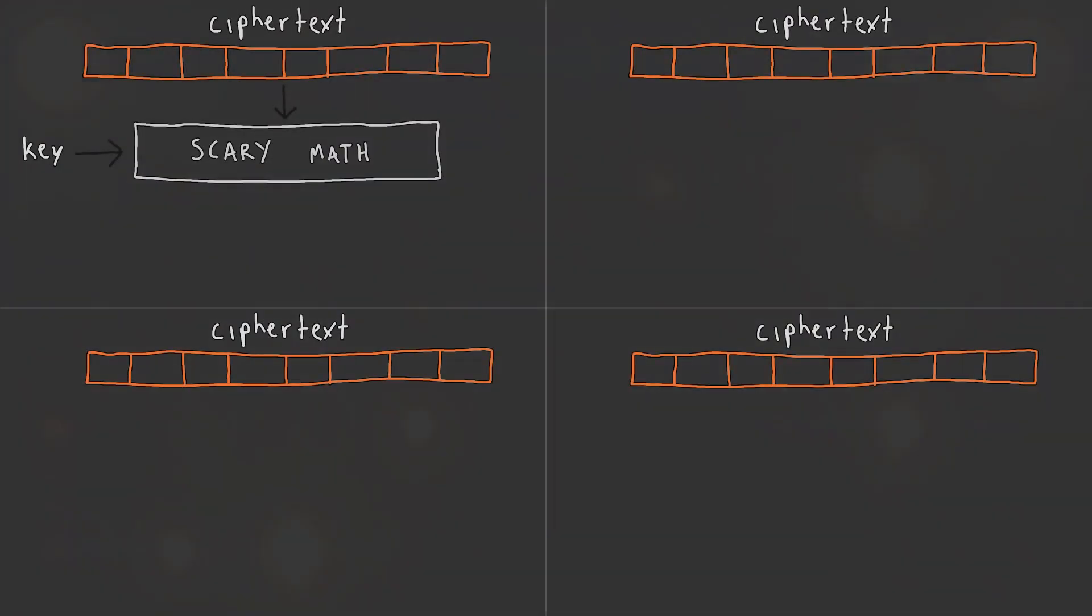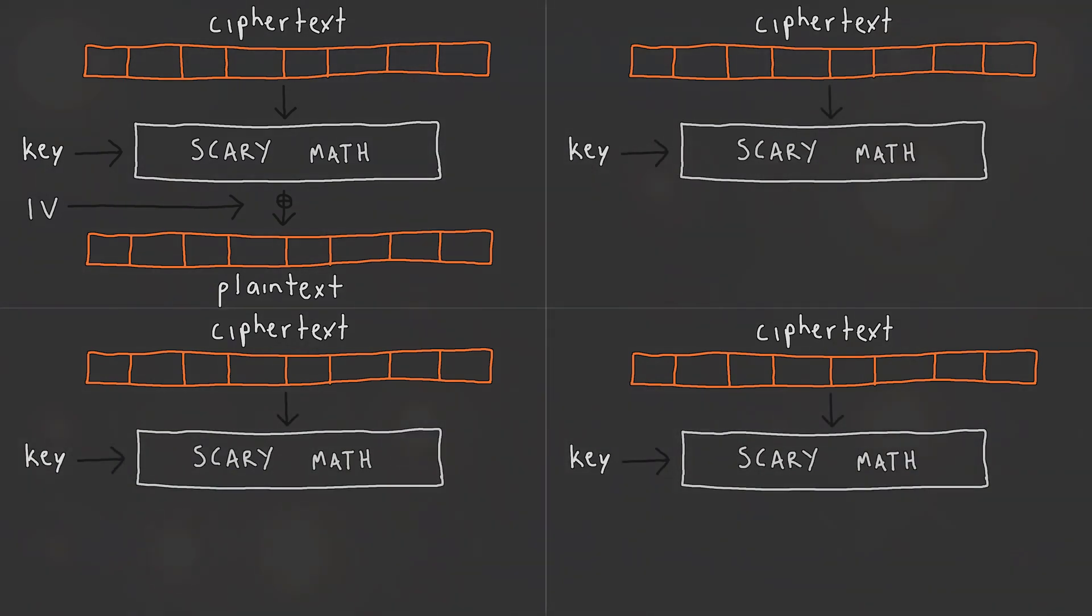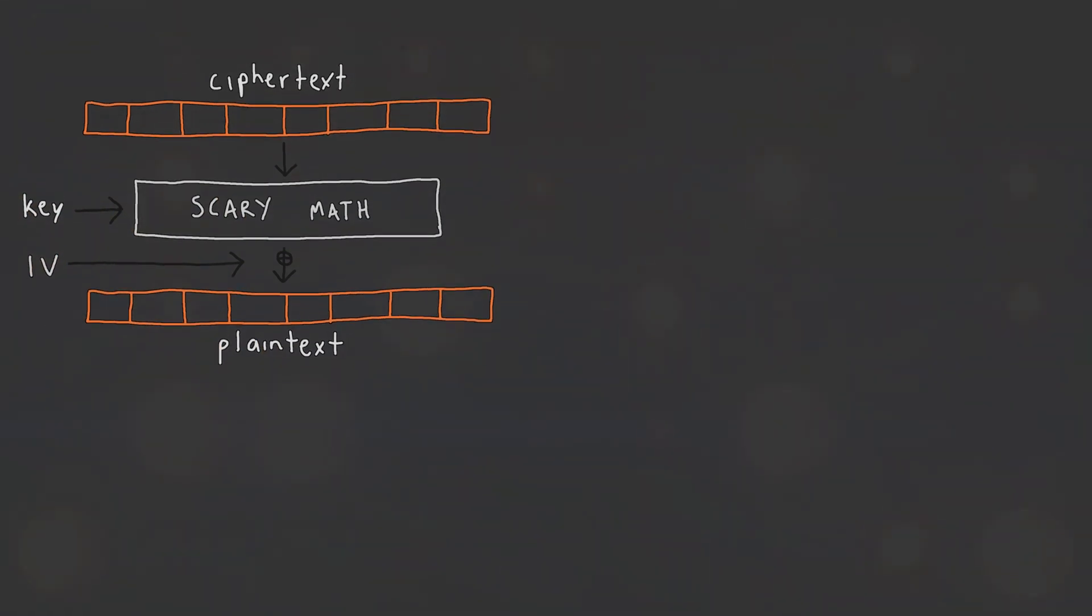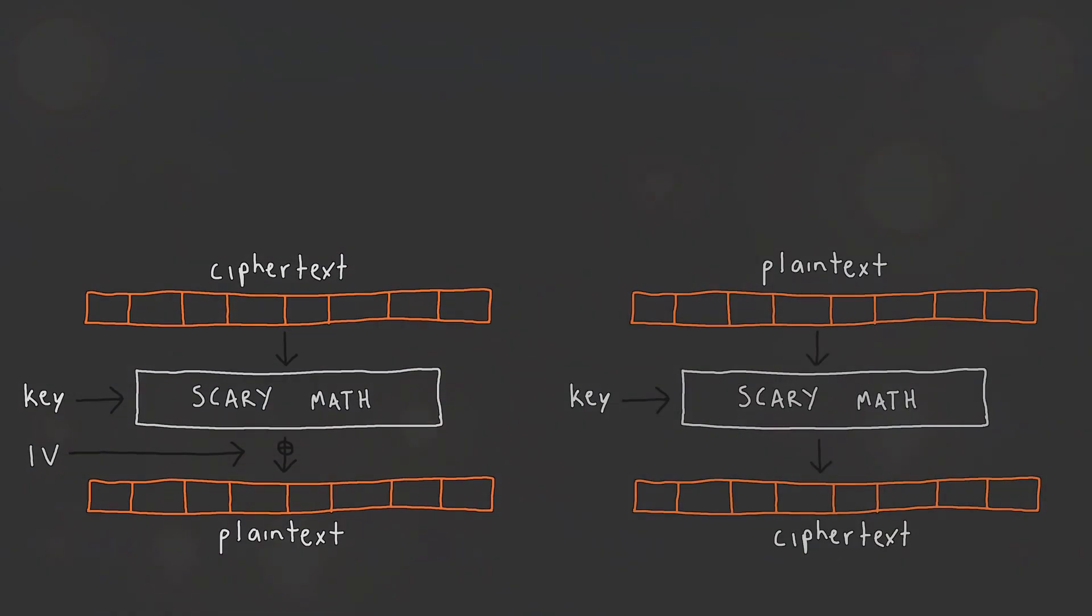Decryption works in the opposite order. The first block of ciphertext is decrypted with the key, then XORed with the IV to create the plaintext. Every other block is decrypted with the key, then XORed with the previous block ciphertext to recover the plaintext. That's it. Now you understand how ECB and CBC modes of operation work in symmetric block ciphers. The introduction of an IV for the first block and XOR process are the only real differences between the different modes.